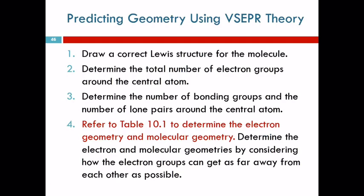So, how do you predict geometry using VSEPR theory? You have to start with a correct Lewis structure. Then, you have to determine the number of electron groups, and determine the number of bonding groups and lone pairs. Now, what your book says in its example, refer to table 10.1 to determine the electron geometry and molecular geometry. I think that's terrible advice. I'm not going to give that to you on an exam. So, that's not going to work. That's not good.